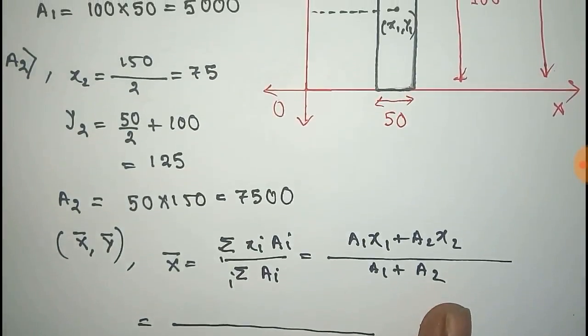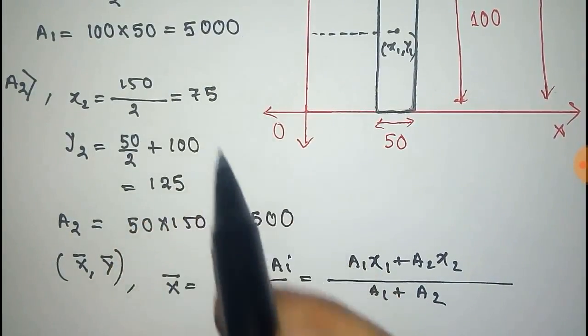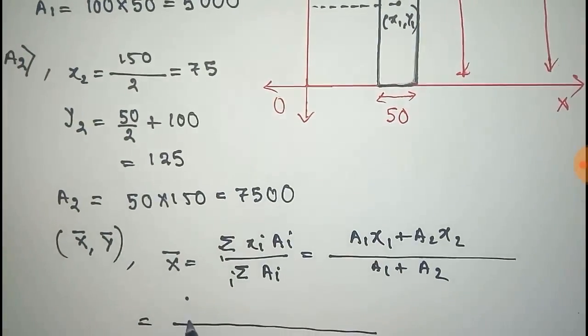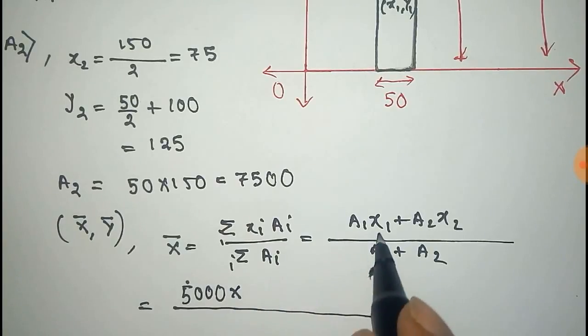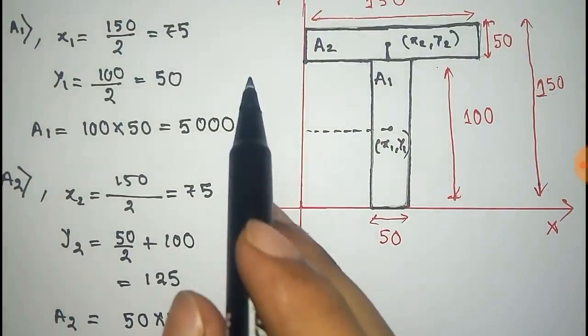Now we have to put the values: A1 is given by 5,000, and x1 is given by 75.